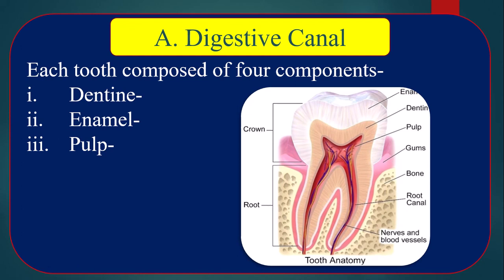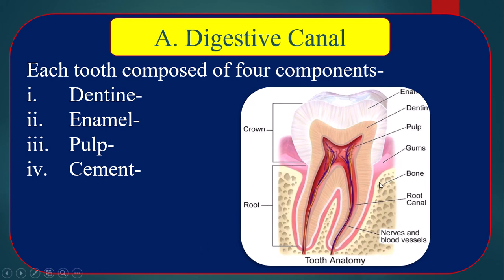Number three, pulp — the cavity inside the tooth, which is enriched with blood vessels (arteries and veins) as well as nerve cells. Number four, cement — a thin covering over the dentine, especially the root portion, which helps to attach the tooth to the gum.